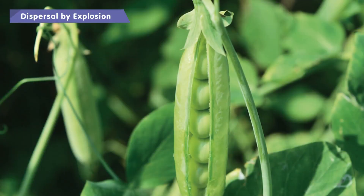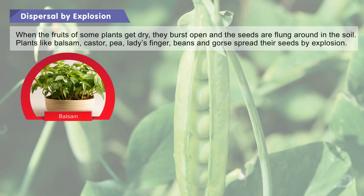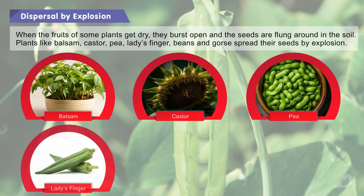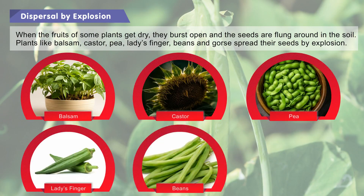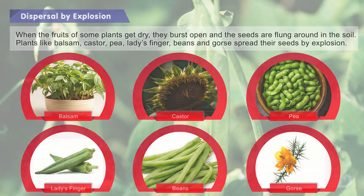Dispersal by explosion: When the fruits of some plants get dry, they burst open and the seeds are flung around in the soil. Plants like balsam, castor, pea, lady's finger, beans, and gorse spread their seeds by explosion.